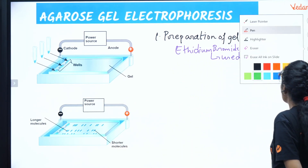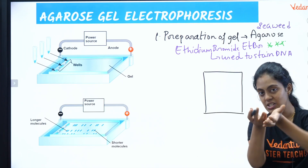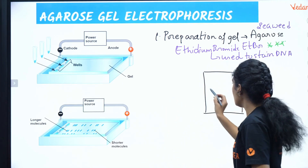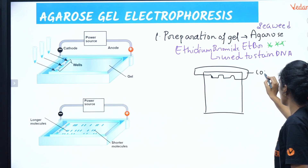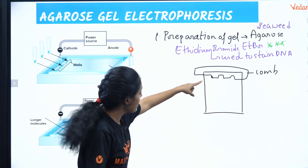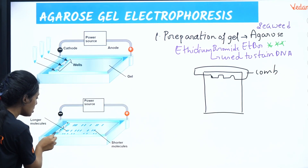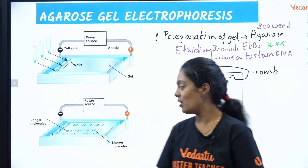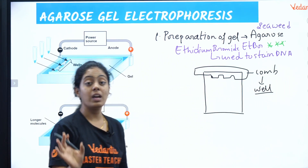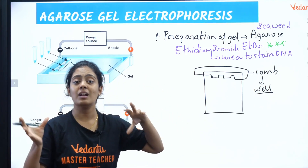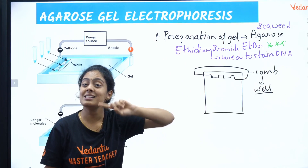We pour the gel into a gel casting tray and place something called a comb. The comb is placed in the gel before it solidifies, and it will help in the formation of wells — depressions in the gel. The wells are where I will load the sample. The gel will take about one to one and a half hours to solidify. So that completes the preparation of gel. ETBR is the stain — very important to remember.